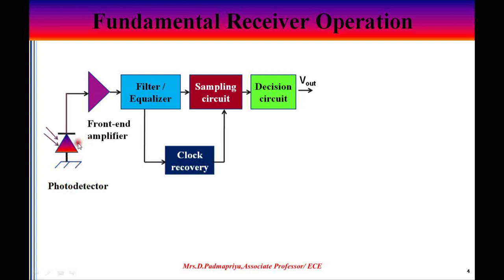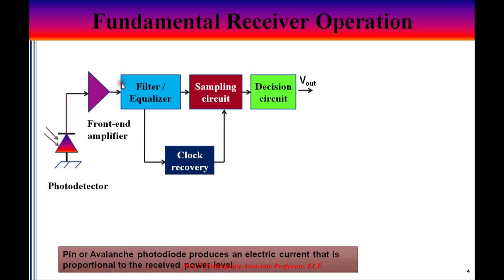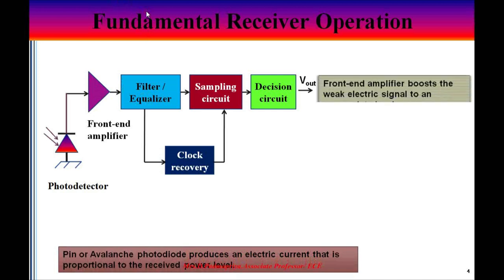Since this electric current produced is very weak, an amplifier is needed to increase the strength of the signal. The amplifier used here is called the front end amplifier, or it can also be called a preamplifier. Then the low pass filter used here is to filter the noise or to reduce the noise that is outside the signal bandwidth.